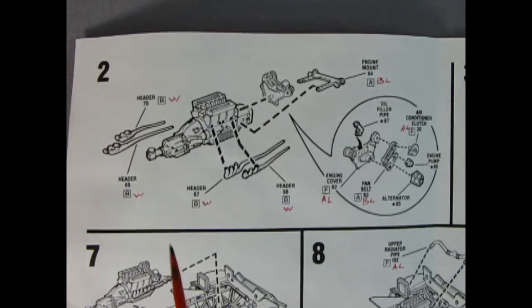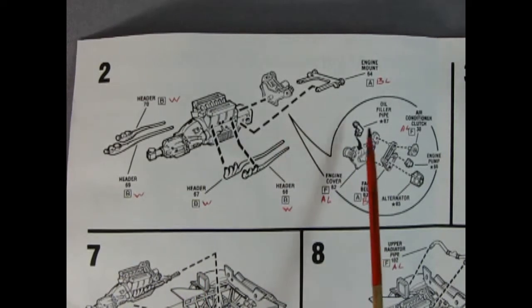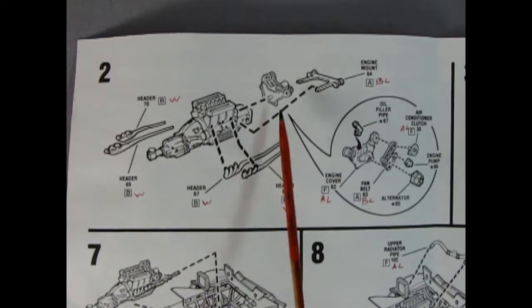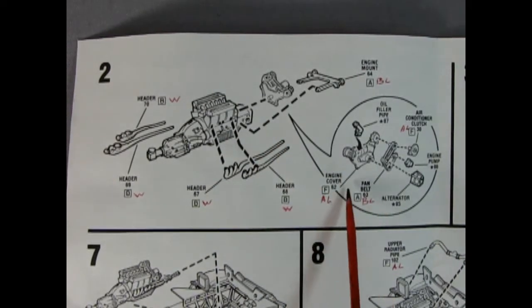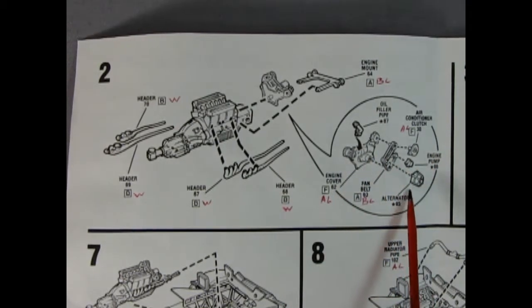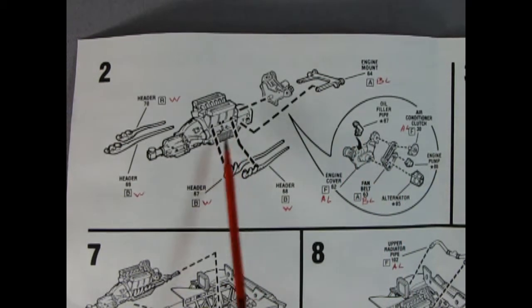Panel 2 shows our exhaust manifolds being glued on and as you can see you get four of them and then we've got this elaborate engine mount right here and then this little balloon is pointing toward there. That's our engine cover, our oil filler pipe, our air conditioning unit, our engine pump, and our alternator and fan belt. Those all glue together and then glue to the front of the engine.